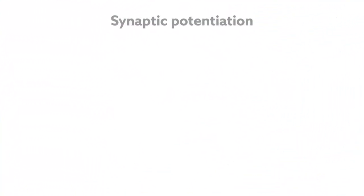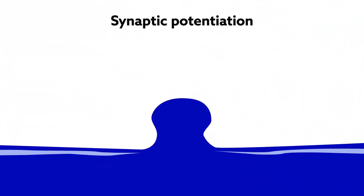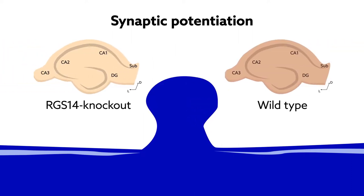The teams reached this conclusion by examining synaptic potentiation, thought to be the cellular substrate of memory formation, in brain slices prepared from RGS14 knockout and wild-type adult mice.